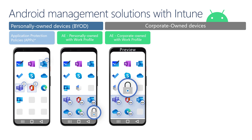Now let's move over to the corporate-owned management options for Android. Starting with corporate-owned with work profile — this option allows for the entire device to be managed, but similar to the personally owned with work profile option, it provides clear separation between work and personal profiles on the device. This option is still in preview, so we will not be covering it further in this video series.